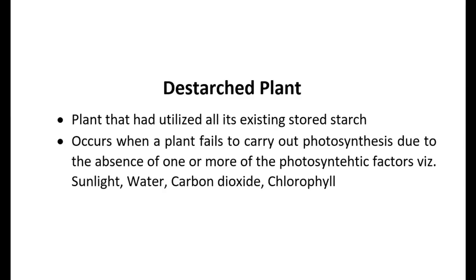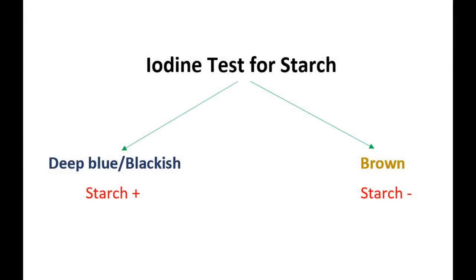A de-starch plant cannot remain alive for long unless it is resupplied with the vital factors necessary for photosynthesis to occur. The absence or presence of starch, and thereby photosynthesis, is determined using iodine solution, which turns blue-black in color in the presence of starch, but retains its original brown color in the absence of starch.